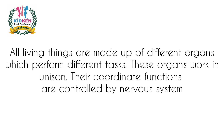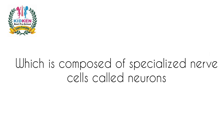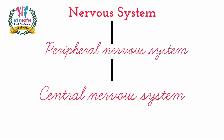All living things are made up of different organs which perform different tasks. These organs work in unison. Their coordinated functions are controlled by the nervous system, which is composed of special nerves called neurons. The nervous system is divided into two parts: the central nervous system and the peripheral nervous system.